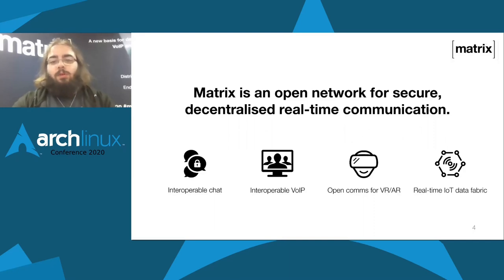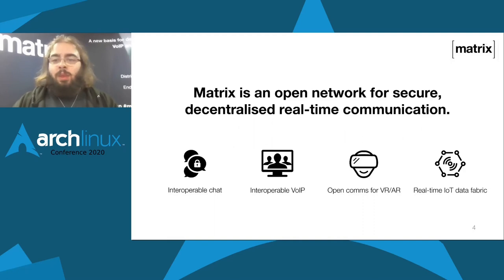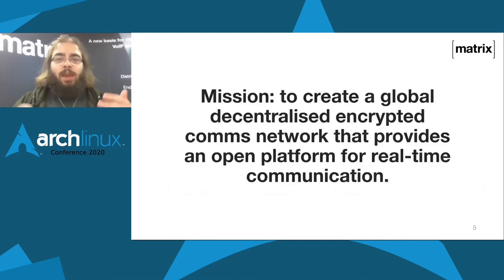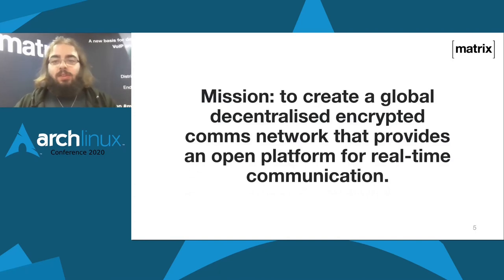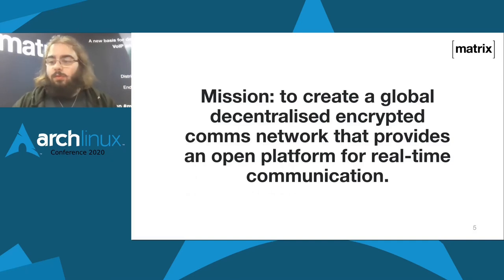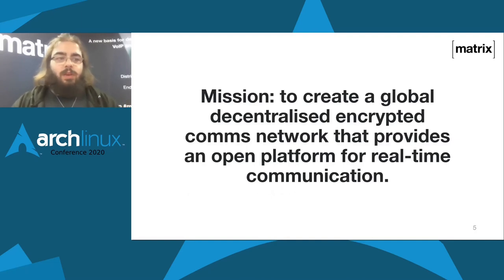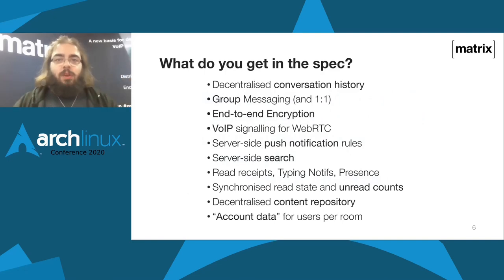Matrix is an open network for secure, decentralized, and real-time communications that can be used for interoperable chats — between different clients, different servers, sometimes different chat platforms entirely. It can also be used for VoIP, for virtual reality and augmented reality. It can also be used for IoT. This network has a mission: to create a global, decentralized, encrypted communication network that provides an open platform for real-time communication. To work towards that mission, Matrix is defined by an open spec which comes with a bunch of very interesting features.